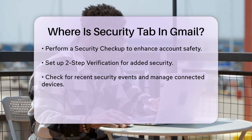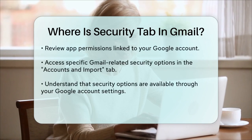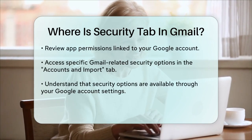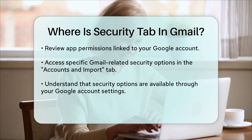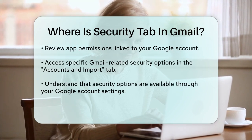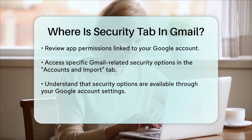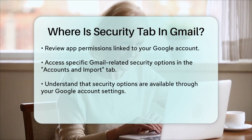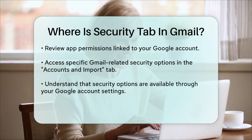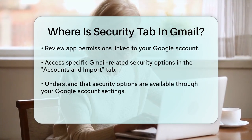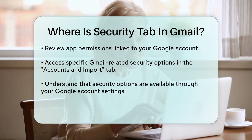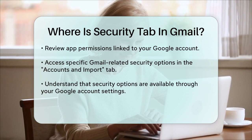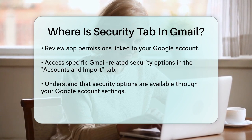Back in your Gmail settings, if you need to check specific Gmail-related security options, you can do so from the various tabs. For instance, the Accounts & Import tab might have some security-related settings, such as managing blocked addresses or automatic forwarding. So, while there isn't a direct security tab within the Gmail settings, all your security options are just a click away through your Google Account Settings page.